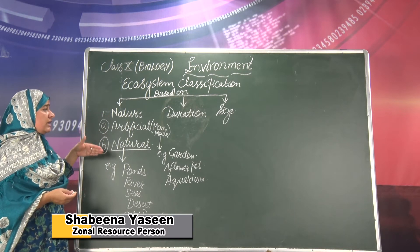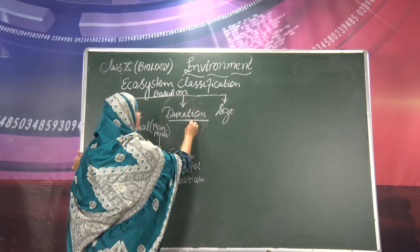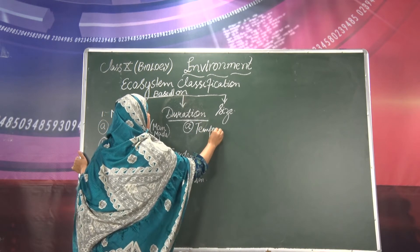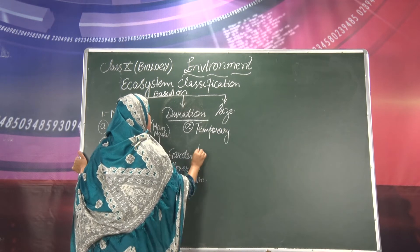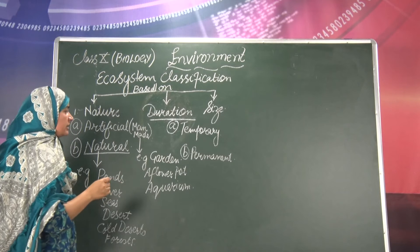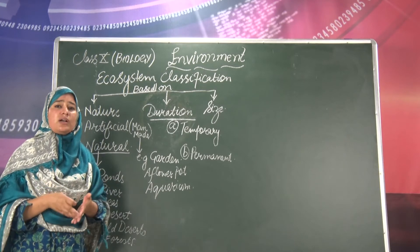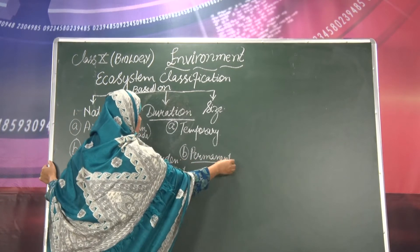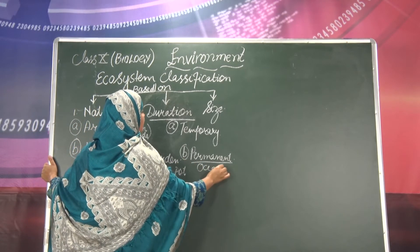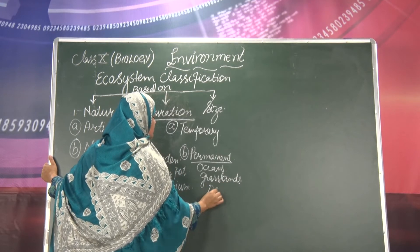Next, based upon duration, we again have two types of ecosystems: one is temporary and the other is permanent. Temporary ecosystems last for a very short period of time, while permanent ones are long lasting. Under the permanent category, mostly these are natural forms of ecosystems — like oceans, grasslands, and deserts.